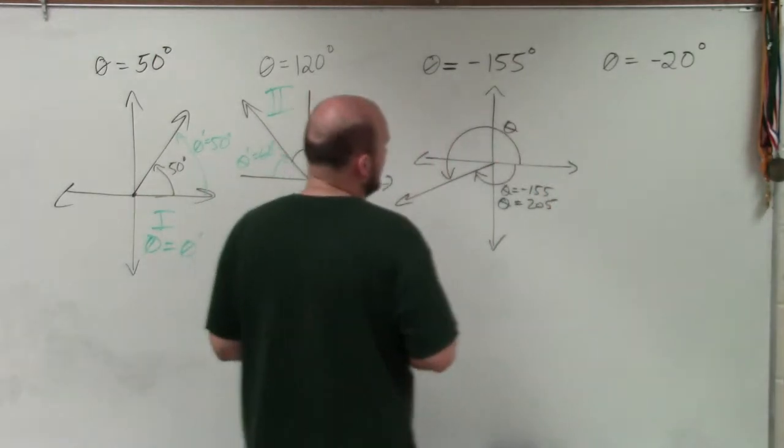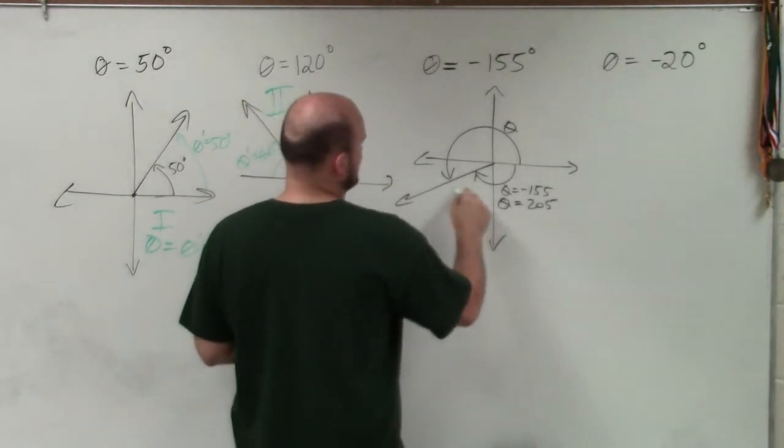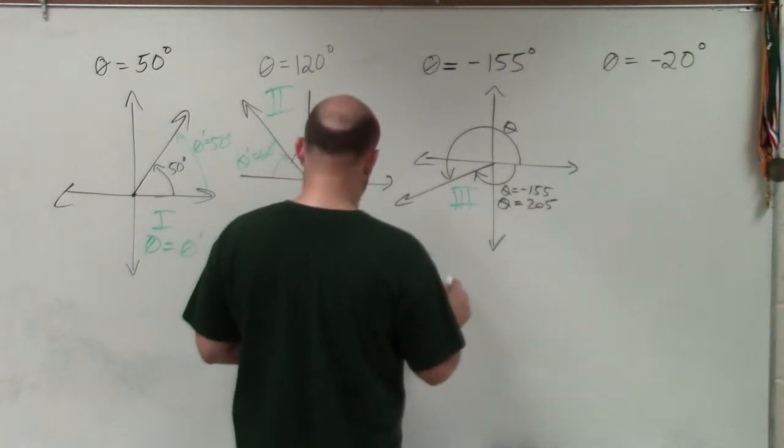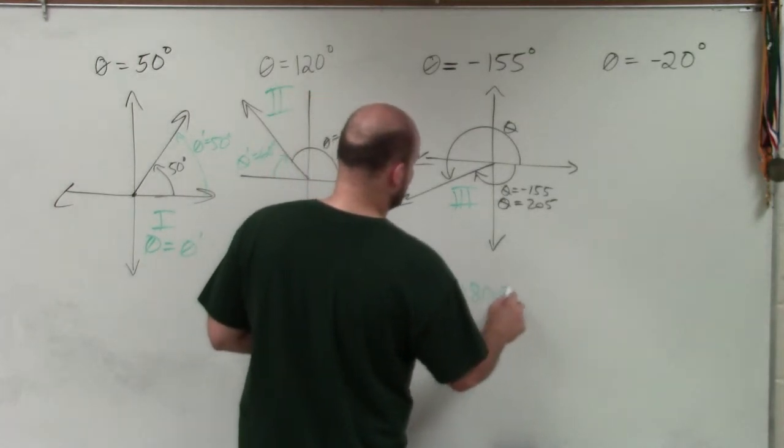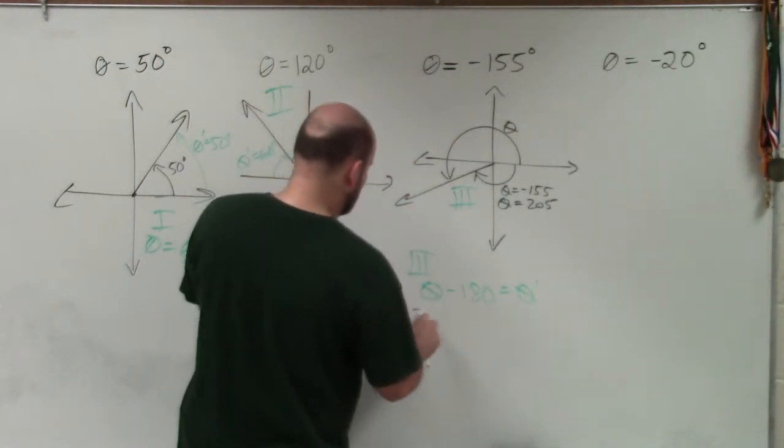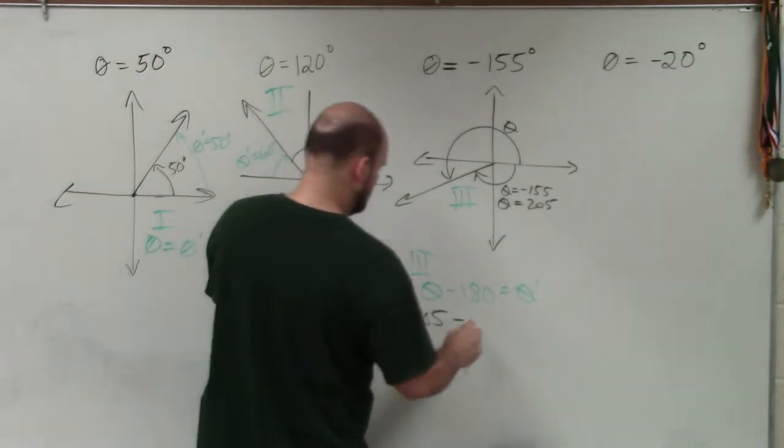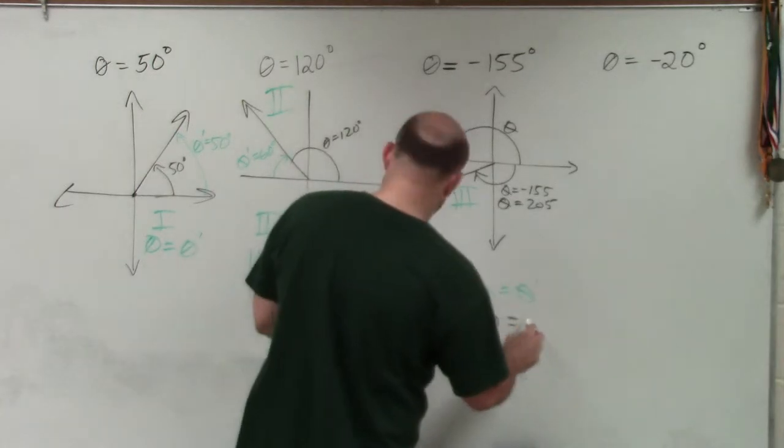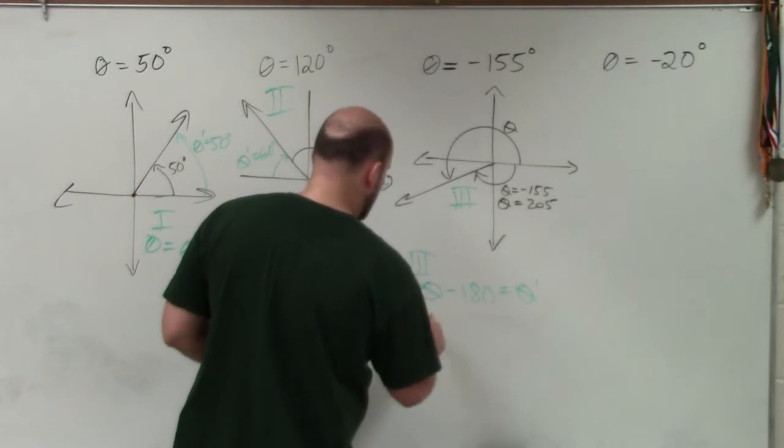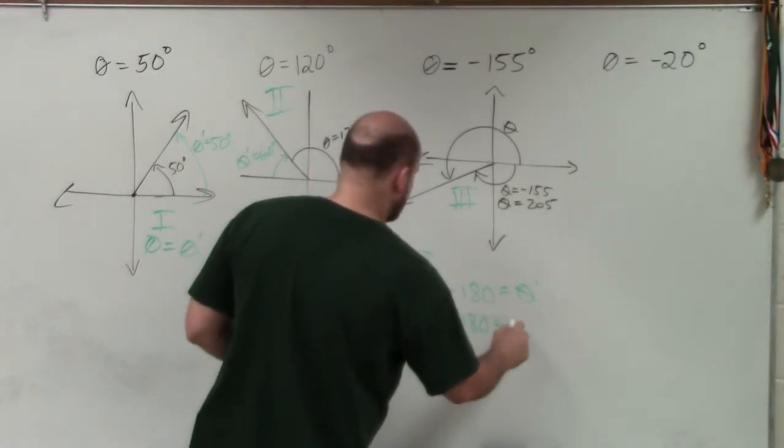So you could do theta equals negative 155, or you could also do theta as 205. We want to write that the formula works when the angle is positive. It doesn't work when the angle is negative. So that's basically theta here. When it's in the third quadrant, which you can see this one is, the rule is going to take theta minus 180 equals theta prime. My theta in this case is 205, minus 180, which is going to leave me with 25.